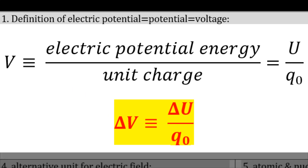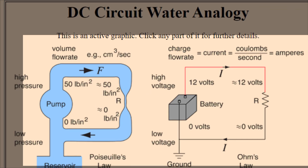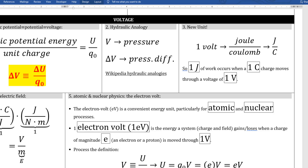Voltage is defined as electric potential energy per unit charge. Here's an analogy: in a plumbing system, a water pump takes low pressure water and boosts it to high pressure water so it flows out of your faucet at a nice rate. Think of a battery as doing the same thing — a battery takes low voltage or low energy charges and boosts them to a higher voltage or higher energy stream of charges.